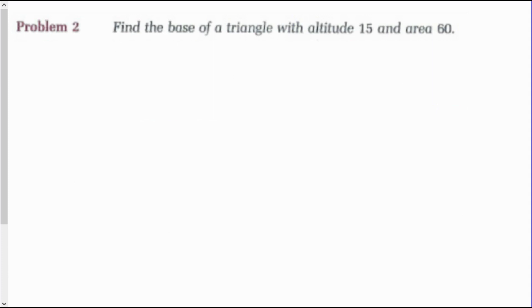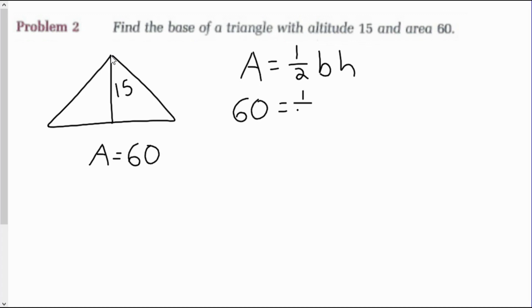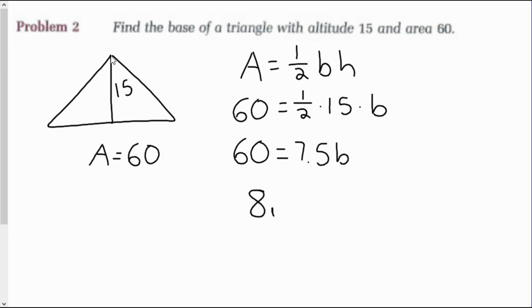Problem 2: find the base of a triangle with altitude 15 and area 60. Drawing a diagram with the altitude of 15 dropped from a vertex and total area of 60. Area of a triangle equals one-half base times height. So 60 equals one-half times 15 times B. One-half times 15 is 7.5, so 60 equals 7.5B. Dividing by 7.5, I get a base of 8 units.